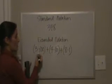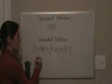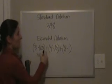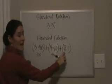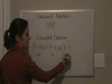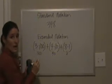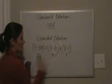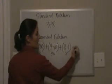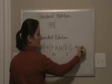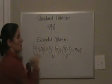348 is written 3 times 100, which gives us 300, plus 4 times 10, which gives us 40, plus 8 times 1 equals 8. Now there's many ways to write multiplication, and I've chosen to use dots. 300 plus 40 plus 8 equals 348, the same as our standard notation.